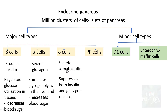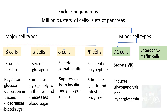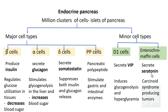Delta cells secrete somatostatin, a hormone which suppresses both insulin and glucagon release, making it very important for the regulation of both beta and alpha cells. PP cells secrete pancreatic polypeptide, which stimulates gastric and intestinal enzymes. The minor cell types include D1 cells, which secrete vasoactive intestinal polypeptide (VIP), inducing glycogenolysis and hyperglycemia, and enterochromaffin cells, which secrete serotonin and may result in tumors causing carcinoid syndrome.